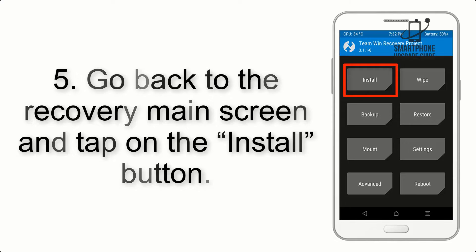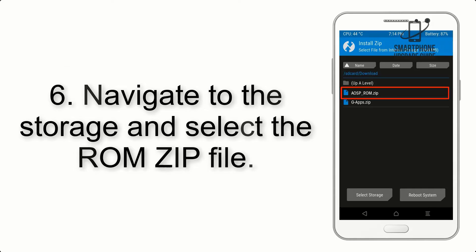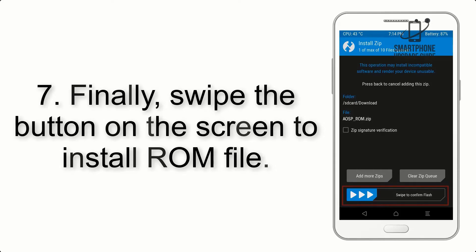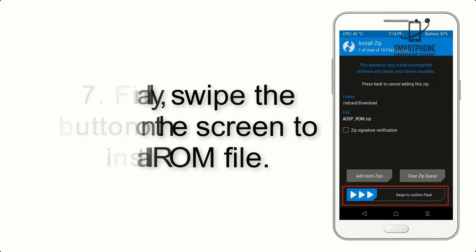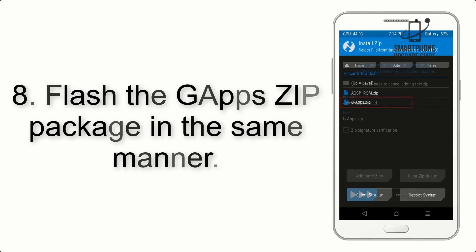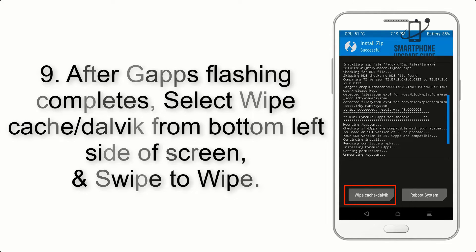Step 5: Go back to the recovery main screen and tap on the Install button. Step 6: Navigate to the storage and select the ROM zip file. Step 7: Finally, swipe the button on the screen to install the ROM file. Step 8: Flash the GApps zip package in the same manner.